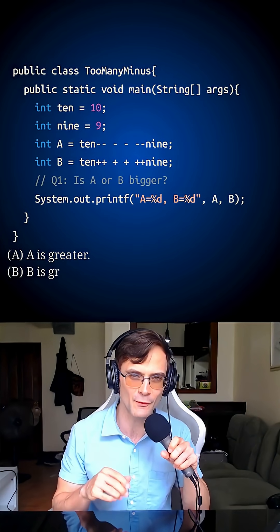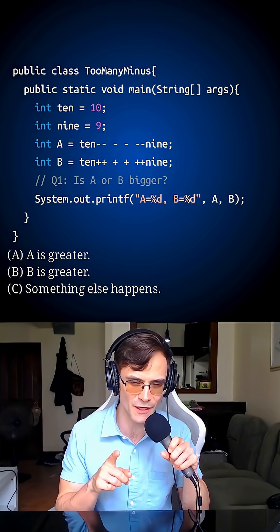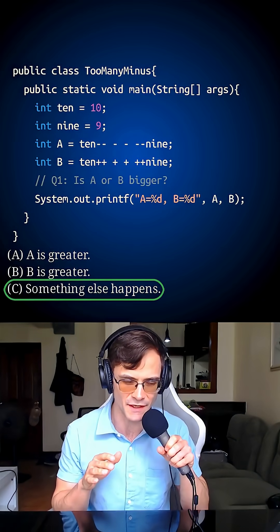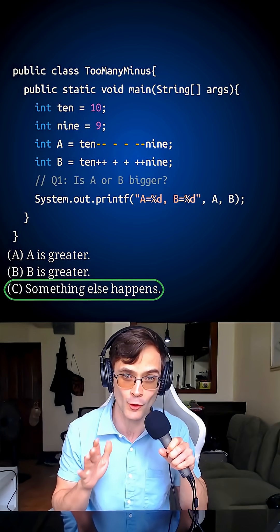What happens when I run this Java code? You've got three choices here. Go ahead and make your prediction. I'll give you the answer in 3, 2, 1. So the answer is going to be C, and it's not C because this code doesn't compile or crashes.